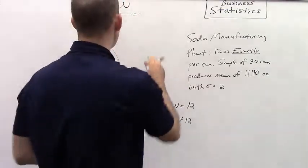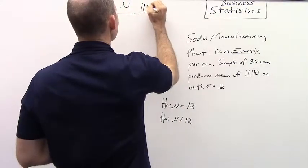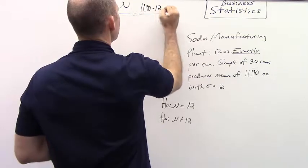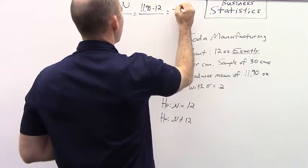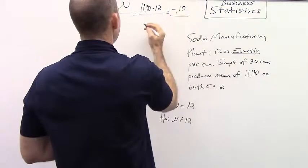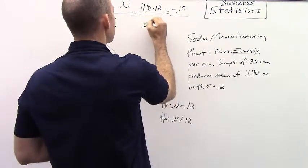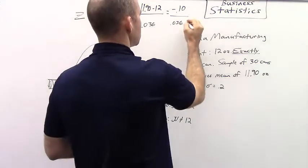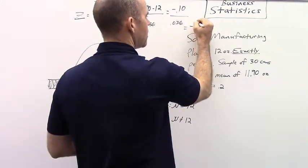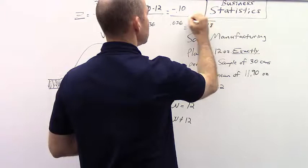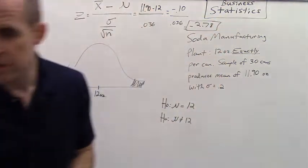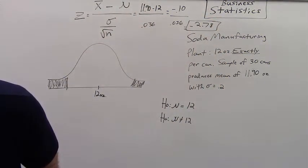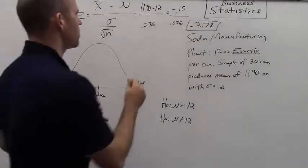Well, let's put it into our z-score. So we have 11.9 minus 12. That is equal to negative 0.10. And then our standard error is still 0.036. So negative 0.10 divided by 0.036 is negative 2.78. So again, we go to our z-score table and we see that the negative 2.78 is 0.0027.